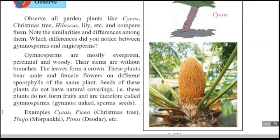Observe the diagram of Cycas. Gymnosperms are mostly evergreen, perennial, and woody. Their stems are without branches — a straight stem is there with no branches observed on the stem area. The leaves form a crown-like structure at the top.